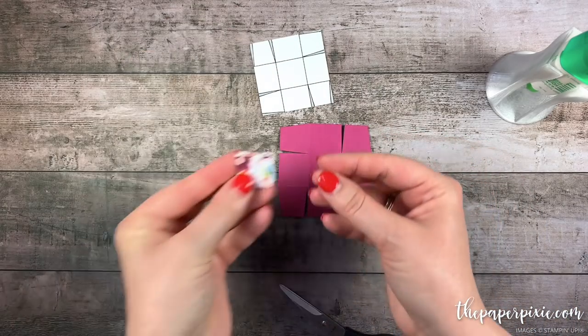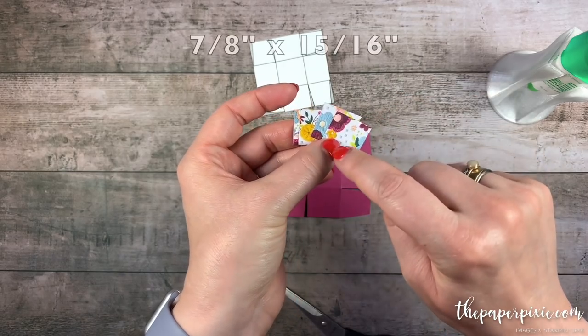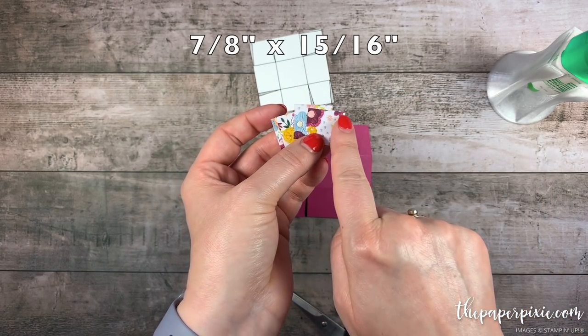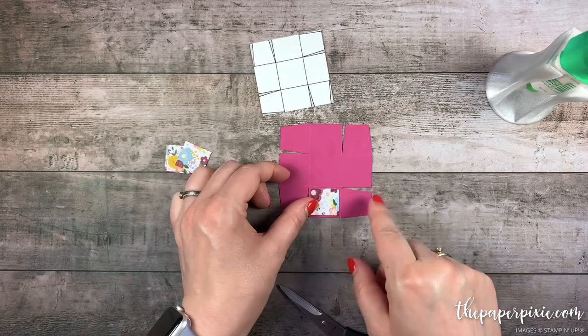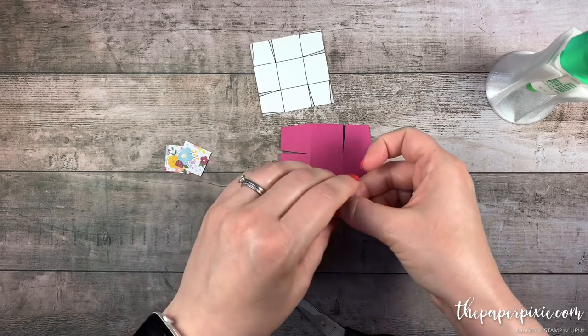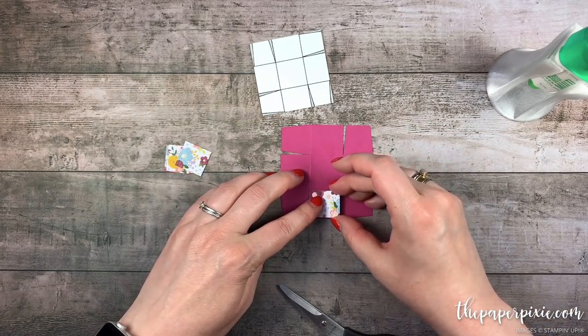Now on the back side I've got four pieces of the needlepoint nook designer series paper and these measure seven eighths of an inch by fifteen sixteenths. The one side is just slightly longer than the other side. We want to orient that in landscape mode and then we'll just work our way around this box lid.